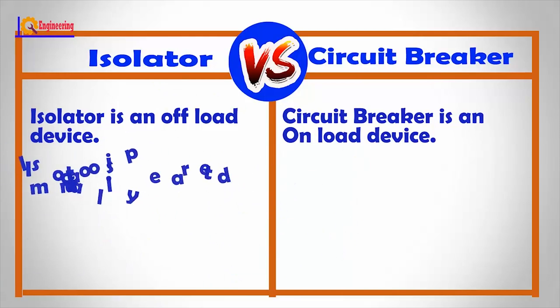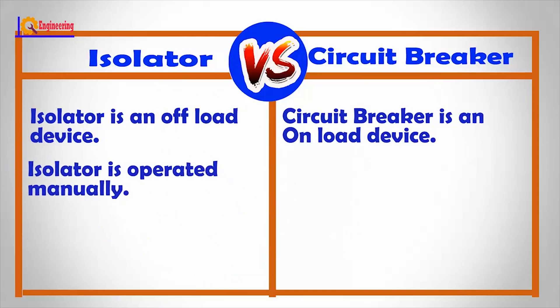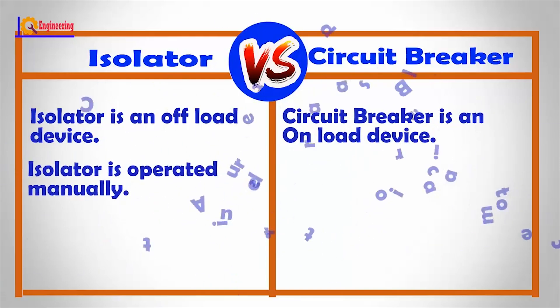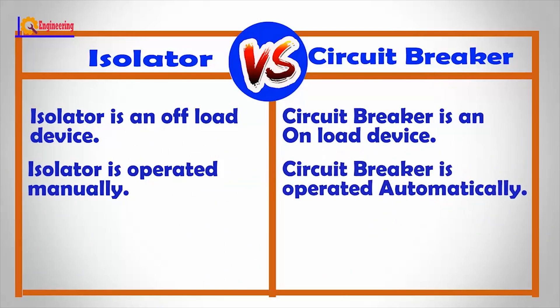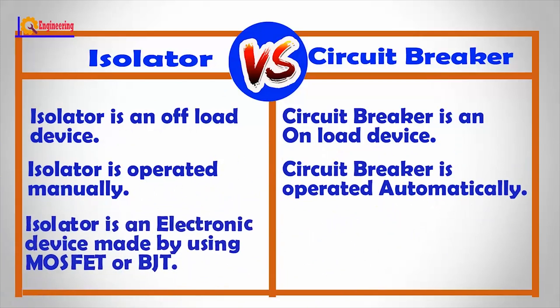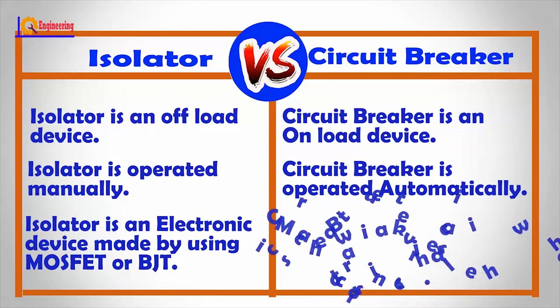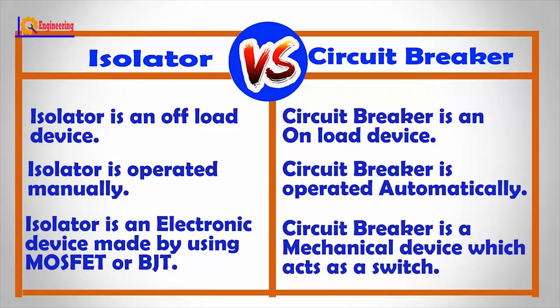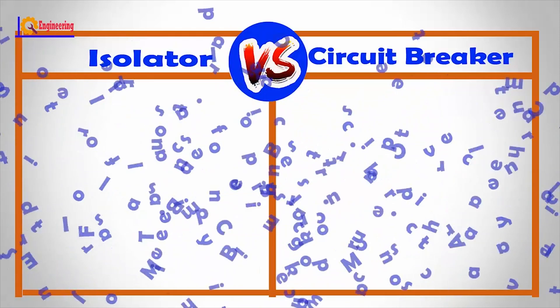An isolator is operated manually, whereas a circuit breaker is operated automatically. An isolator is an electronic device made using MOSFET or BJT, while a circuit breaker is a mechanical device which acts as a switch.